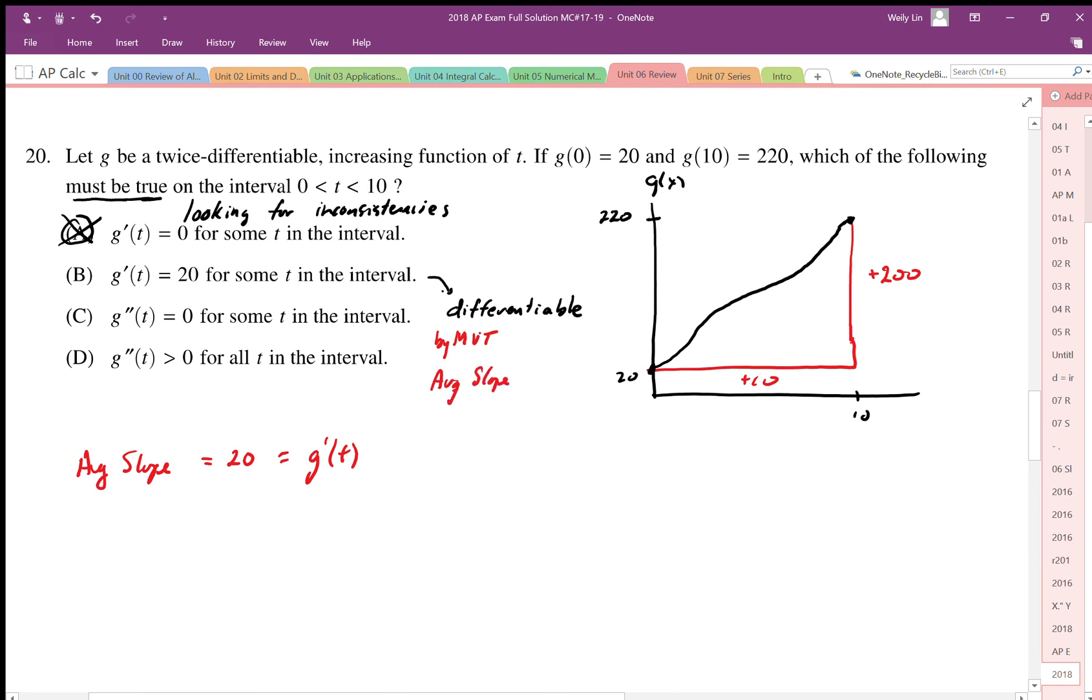We know that if the average slope—by mean value theorem, the average slope must occur in the interval. It must happen, the average slope must occur in the interval between zero and 10. We can see clearly that the average slope of this line here, there could be a tangent here, it could be another tangent there. It is possible that this is the case because it's smooth and continuous; it has to happen at least once. So the answer is B.